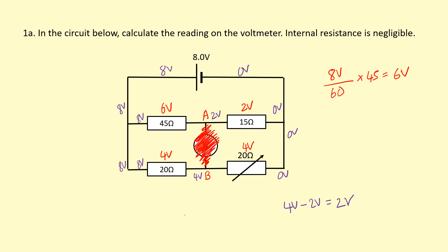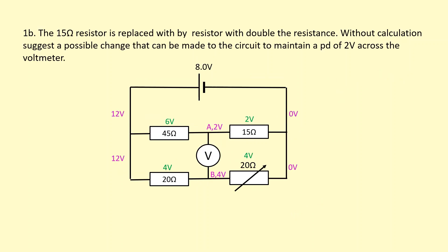Same question, except the 15 ohm resistor is replaced with a resistor of double the resistance. Without calculations, what possible change can be made to maintain the potential difference of two volts across the voltmeter? The resistance of that resistor goes up, so we know the voltage across it will go up — it gets a bigger fraction of the eight volts — and the voltage across the other resistor will have to go down. So the number at point A is going to change.